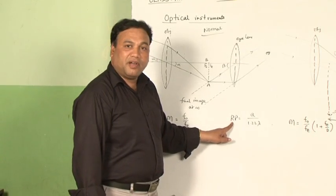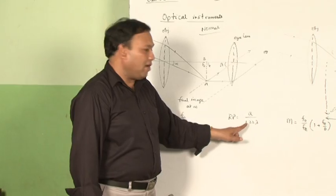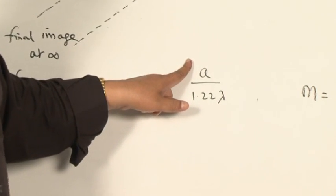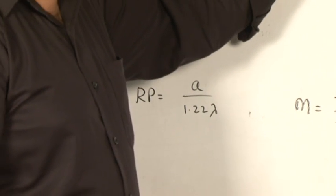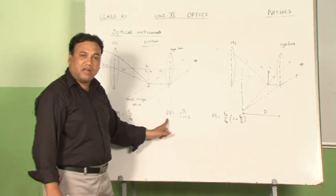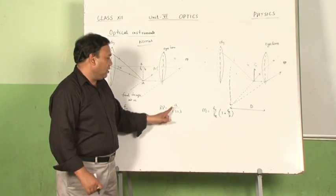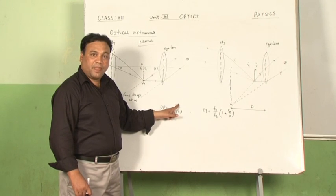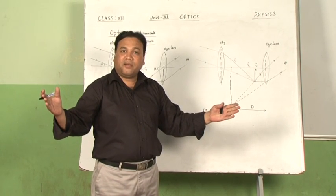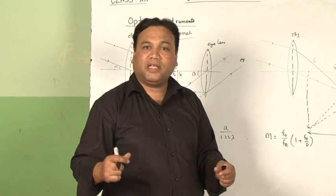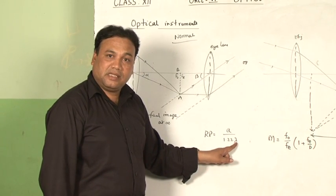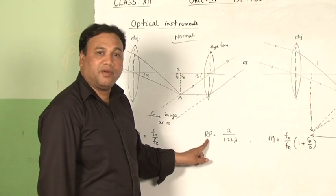The formula for resolving power of this astronomical telescope is A upon 1.22λ, where λ is the wavelength of light used and A represents the diameter of the objective lens used, also called the aperture of the lens. If we want to increase the resolving power of this astronomical refracting type telescope, we have to increase the aperture. Telescopes with a larger diameter objective lens or mirror form a final image of very high brightness and intensity. Decreasing λ can also increase the resolving power.